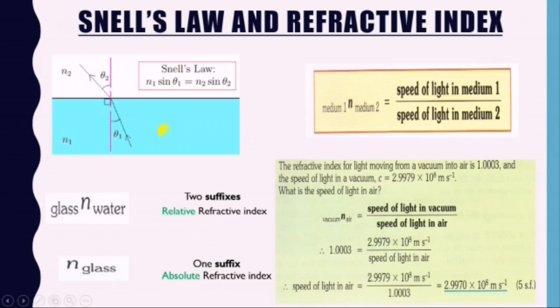As we know, light is refracted because it slows down or speeds up as we have studied in our last lesson. Therefore, the refractive index n can also be written as a ratio of two speeds. So n from medium 1 to medium 2 equals speed of light in medium 1 over speed of light in medium 2.